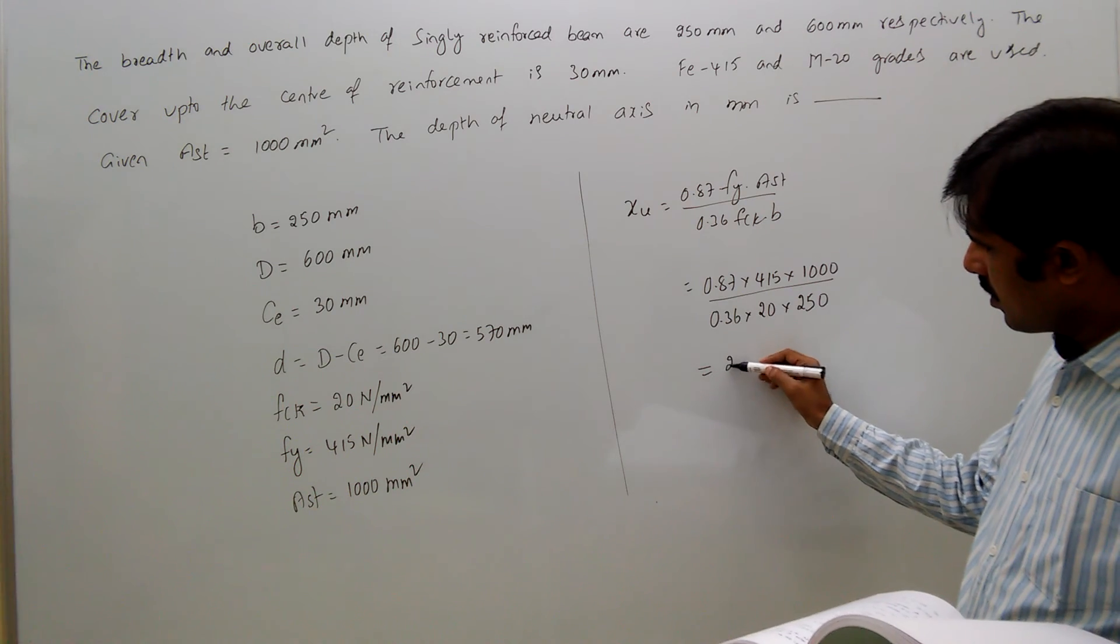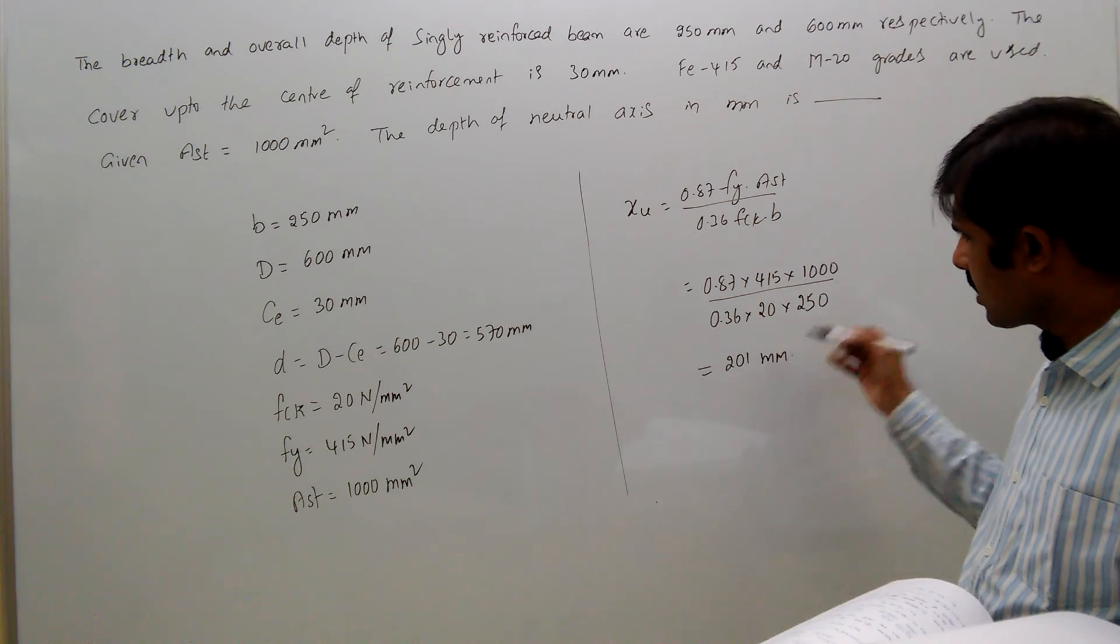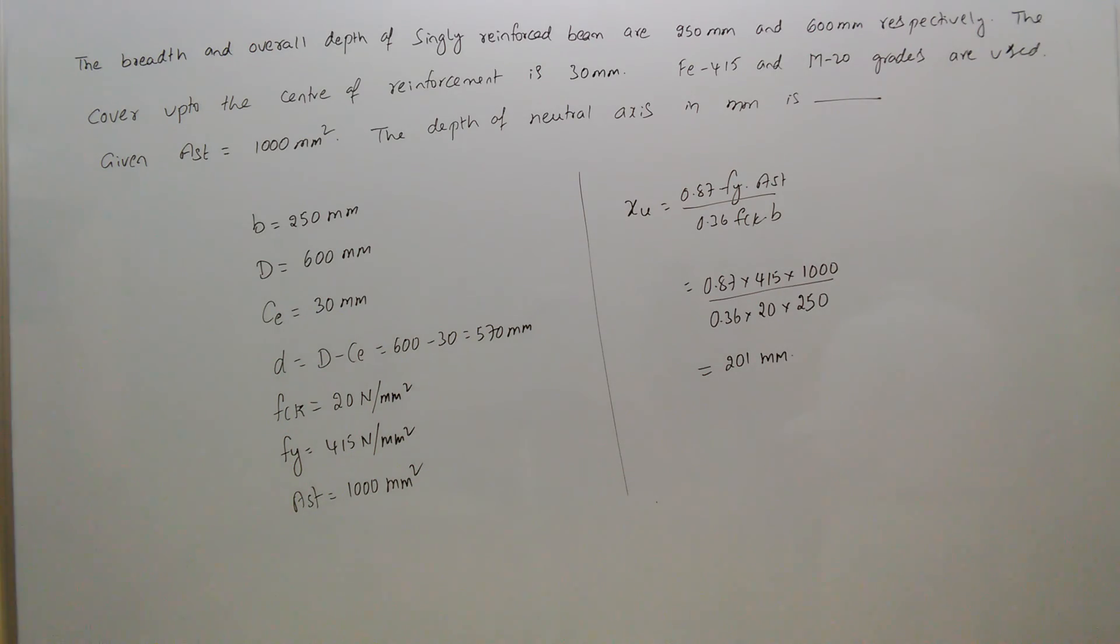Calculating, you get 201 mm as the depth of neutral axis. Thank you.